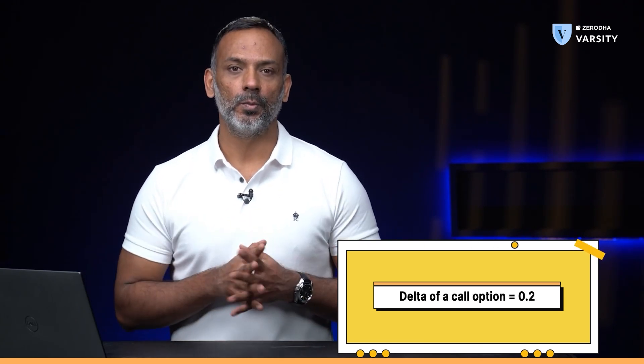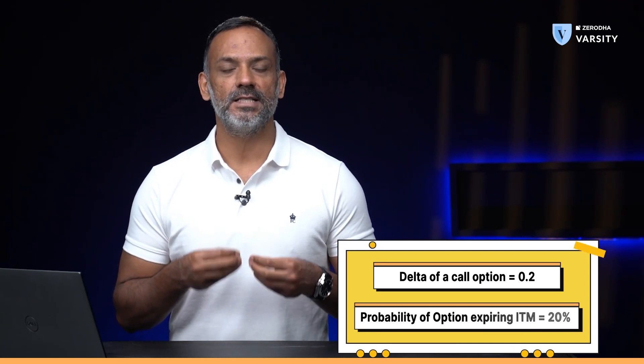Before I conclude this video, there are two other aspects of delta that you should know about. Firstly, you can use delta to evaluate the probability of a strike expiring in the money. For example, if the delta of a call option is 0.2, what this means is there is only a 20% chance that this option will expire in the money. Therefore, if you as an option seller are looking to sell an option to pocket the premium, you would want to select an option with a low probability of expiring in the money — so choose options which have low deltas. Conversely, if the delta is 0.8, there is an 80% chance the option will expire in the money — those are options you as a seller don't want to touch. You can extend this concept to put options as well.